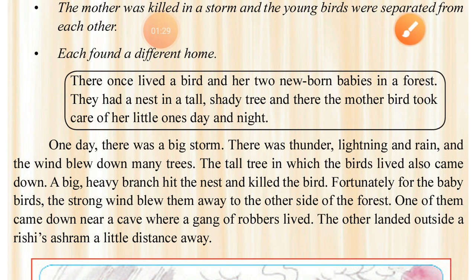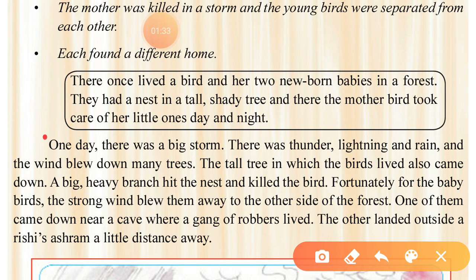One day there was a big storm — ek din ek bari toofan aya. There was thunder, lightning, and rain, and the wind blew down many trees. The tall tree in which the birds lived also came down. A big heavy branch — again 'big' and 'heavy' are adjectives — hit the nest and killed the mother bird. Jo unki maan thi wo bechari mar gayi.